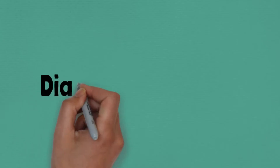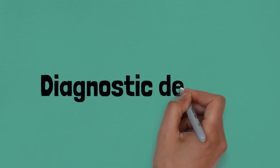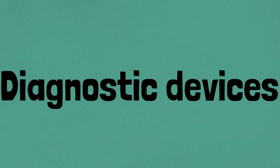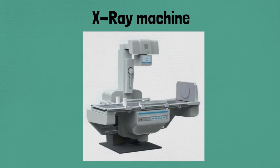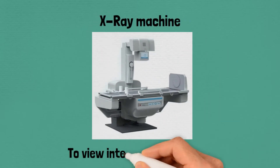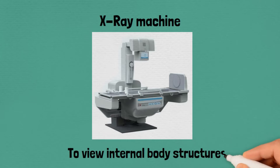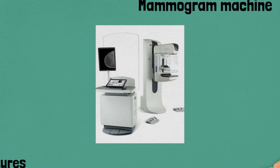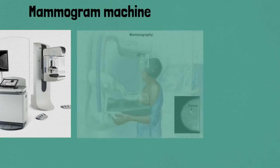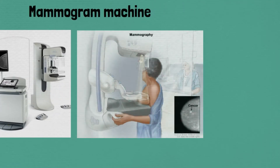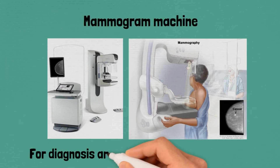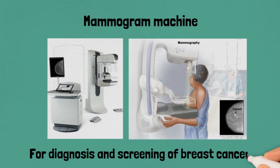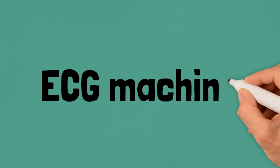Diagnostic devices examples: X-ray machine, used to view internal body structures. Mammogram machine, used for diagnosis and screening of breast cancer.